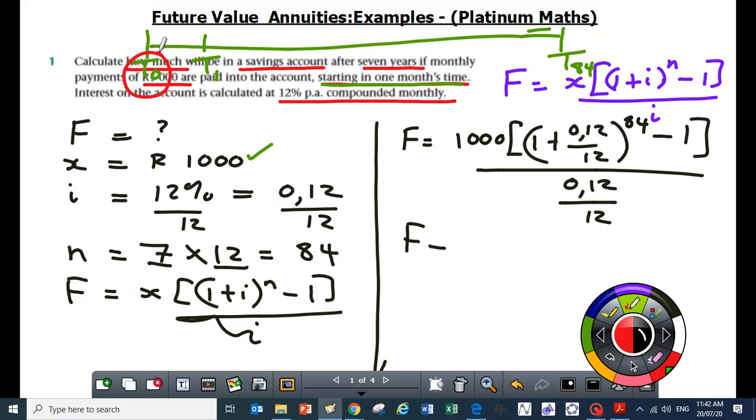Here at T naught, that's when the person goes to the financial institution like Old Mutual, FNB, or ABSA. The person goes to the bank here at T naught, they sign all the paperwork, and then they negotiate to start paying in one month's time. Because here we have got seven years and the total number of payments is going to be made every month, the total is going to be T84. Our N will end up being equal to 84.